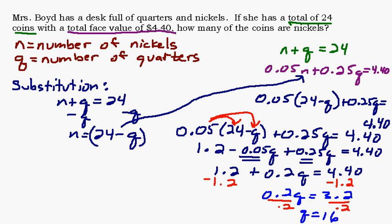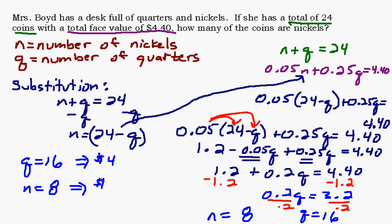So that means I have 16 quarters. And I know there's a total of 24 coins. So if there's 16 quarters, that must mean that to add up to 24, I'd have to have 8 nickels. And you could test that out and see if it works. If I had 16 quarters and 8 nickels, does that come out to be $4.40? Let's see, 16 quarters would be worth $4, and 8 nickels would be worth 40 cents. So that would give me $4.40. Yay, I have the right answer.